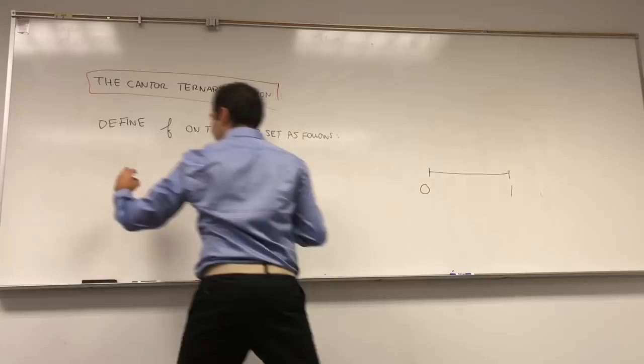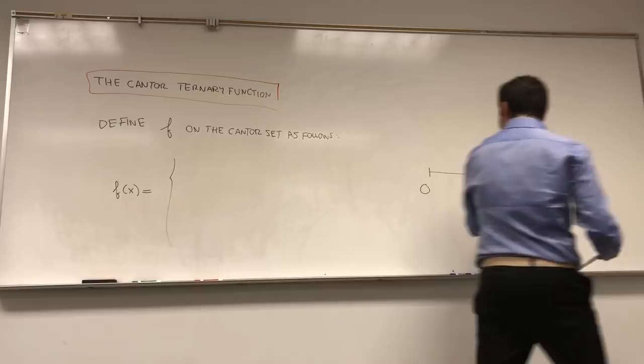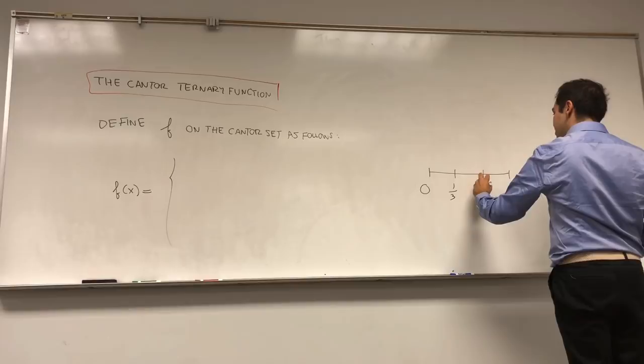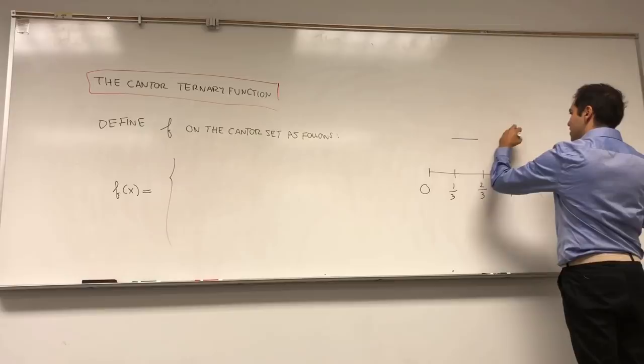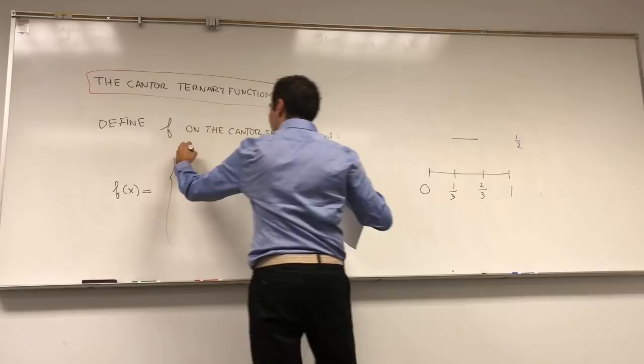f of x equals the following. If you take the interval [0,1] and chop it into three pieces, you get [0, 1/3], [1/3, 2/3], [2/3, 1]. On the middle piece, define f to be 1/2. So it's 1/2 on the interval [1/3, 2/3].